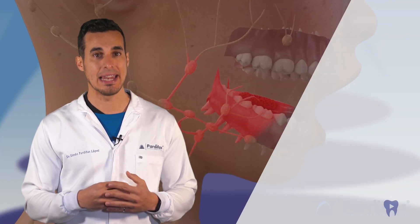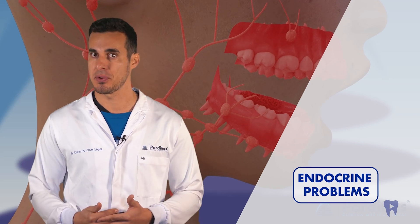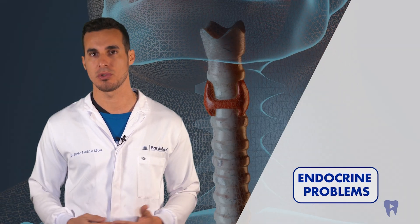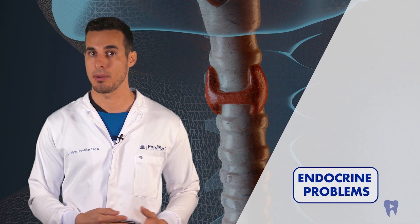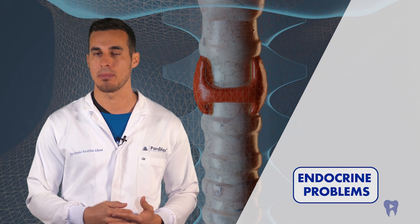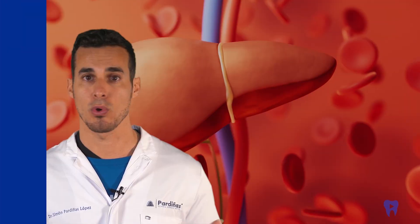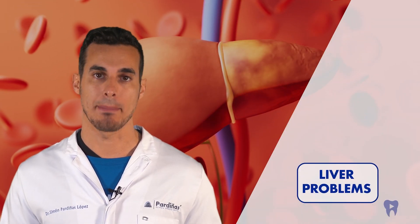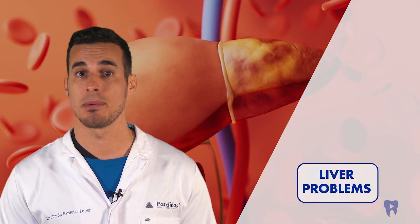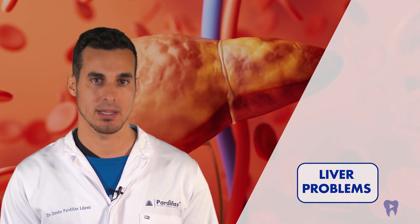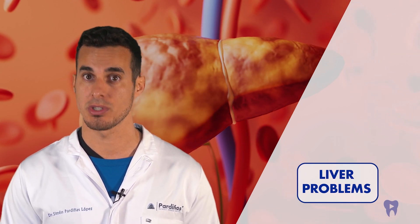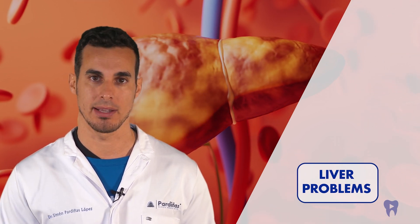Periodontitis may have a link to endocrine disorders, including hypothyroidism and Addison's disease. Inflammation and oral bacteria could affect hormonal balance. Poor oral health can influence liver health. Oral bacteria can travel to the liver and cause inflammation or worsen existing conditions such as hepatitis.